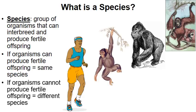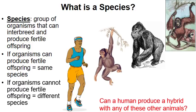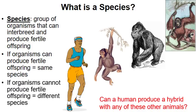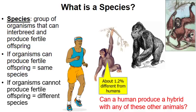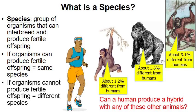If organisms cannot produce fertile offspring, then they are members of different species. Can a human produce a hybrid with a chimpanzee, gorilla, or orangutan? The answer is no — a chimpanzee's DNA is about 1.2% different from humans, the gorilla about 1.6% different, and the orangutan about 3.1% different. You can see it doesn't take much of a difference — just a fraction of a percent — to prevent organisms from reproducing.